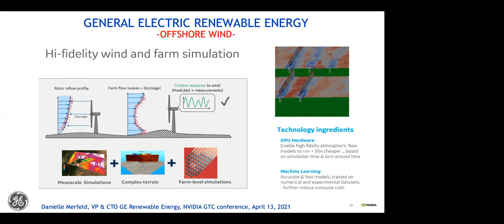In industry, General Electric performs high-fidelity wind farm simulations to optimize wind farm layout. The goal is to maximize generated power and reduce turbine loads by accounting for atmospheric stability, turbulence, wind shear, and turbine physics. GPUs are ideal for handling large datasets and training machine learning models. As stated during a GTC presentation by their CTO, machine learning models help reduce simulation time from months to days for large farms — and the larger the farm, the more benefit you get from HPC and AI.